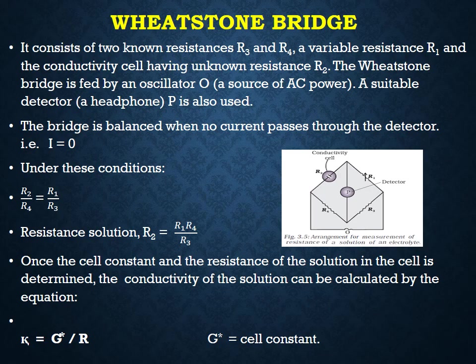Once the cell constant and the resistance of the solution in the cell are determined, the conductivity of the solution can be calculated by the equation k is equal to G star by R, where G star is the cell constant.